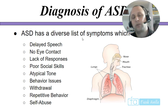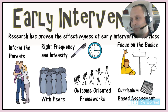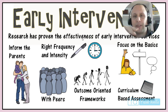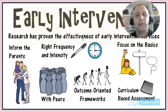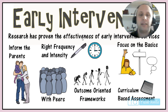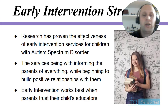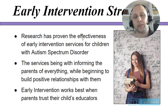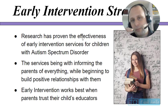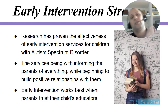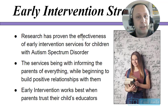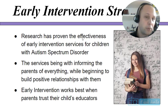Now getting into the field of education — early intervention. Research has proven the effectiveness of early intervention services for children with autism spectrum disorder. A lot of special education legislation has put money into early intervention because the research is definitive that getting children with disabilities early intervention really makes a difference compared to those who don't get it. If the government's putting money into it, you can be sure there's research backing that up.